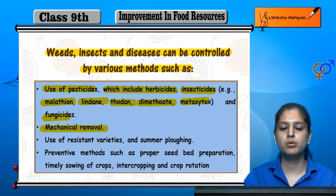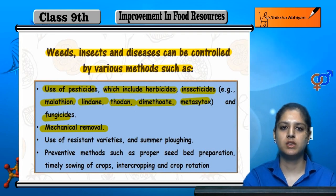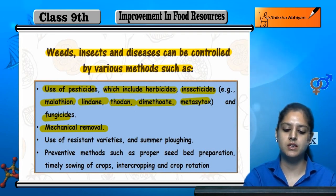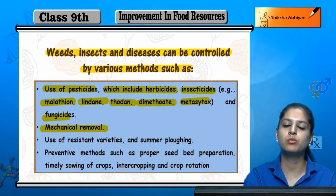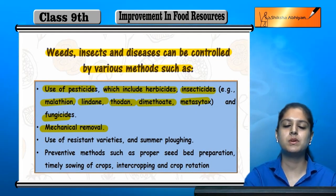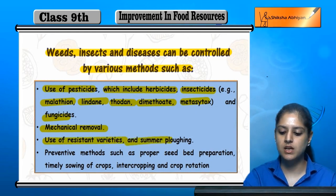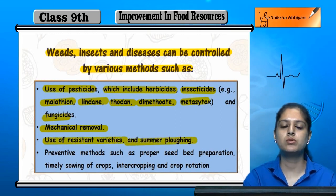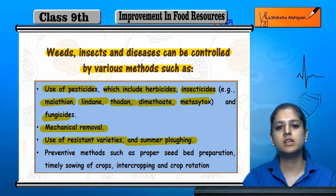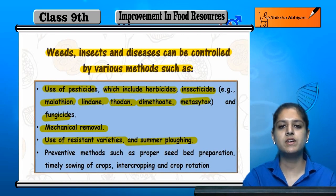Mechanical removal — we can also remove them manually. Chemical sprays can also be applied to remove pests. Use of resistant varieties is another method. Summer plowing — in summer, the fields are plowed so pests are removed from inside the soil.